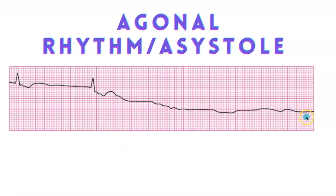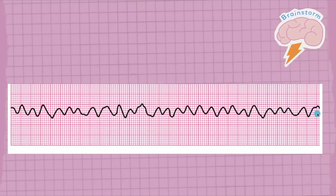Once we get to asystole, everything is absent — there's no P wave, no PR interval, no QRS rate, no rhythm, no pulse, no electrical activity. This is cardiac arrest with a very poor prognosis. Remember, you don't shock asystole. For ACLS, the mnemonic you need to remember is: defib for V-fib and pulseless V-tach. Don't defib asystole — you won't get them back.